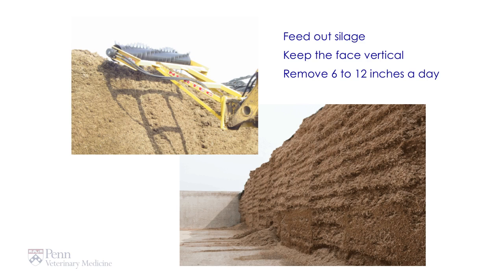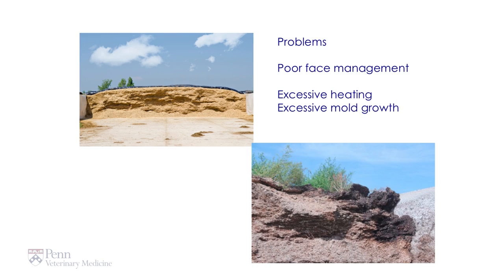When silage is fed out, it needs to be kept vertical to protect the face, keep it fresh, and prevent excessive spoilage and oxygen from penetrating into the face of the trench. Usually we need to remove about 6 to 12 inches a day so the material stays fresh for feeding. Here we see a silage trench that has not been managed well — the face is very irregular. On the bottom right we see hunks of mold produced in the silage, which are unacceptable for animal feed and should be removed prior to feeding.